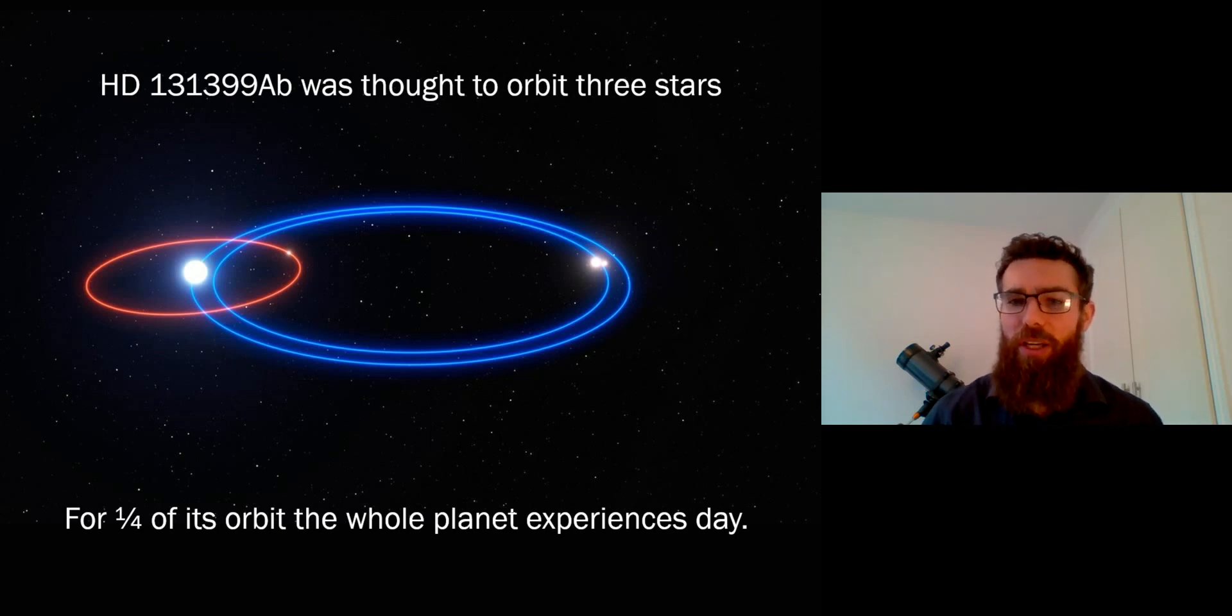So what you've actually got here is two stars close to one another on the right-hand side that are orbiting one another, and then you've got another star that orbits around the outside of those two, and it's the planet that's orbiting the outer one, or was thought to be orbiting the outer one.